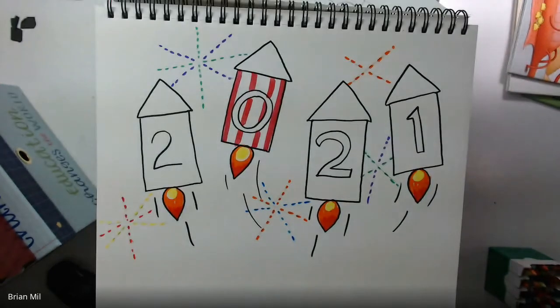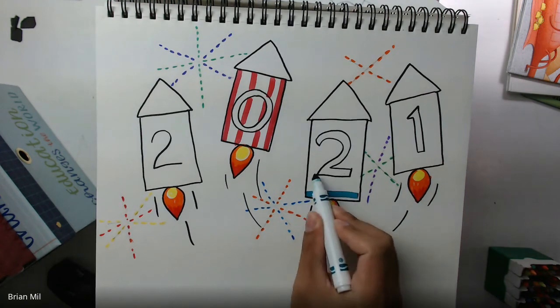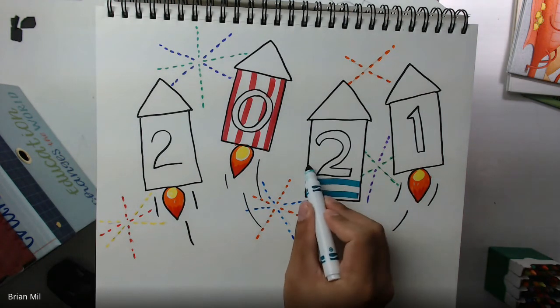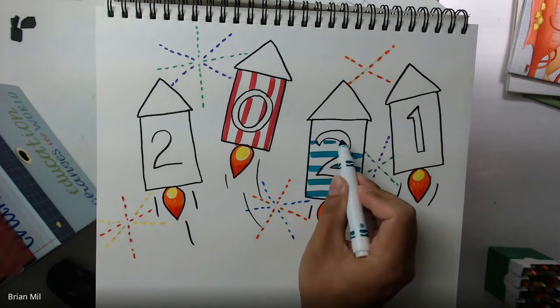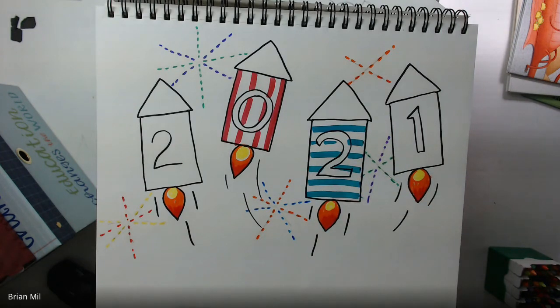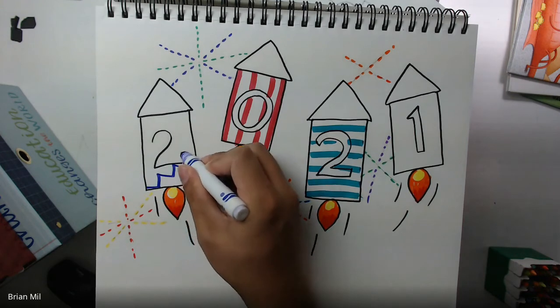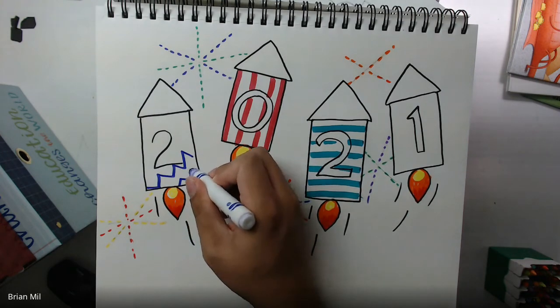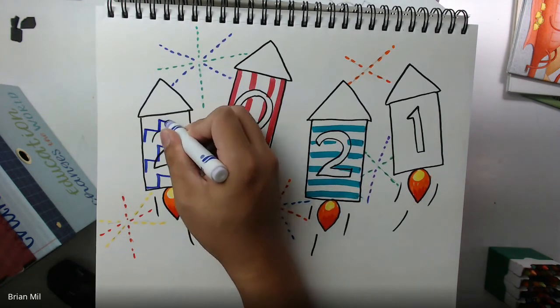So I'll do stripes for that one. Maybe I'll do horizontal stripes for this one. And then maybe I'll do wavy lines or zigzags for this one. Up to you.